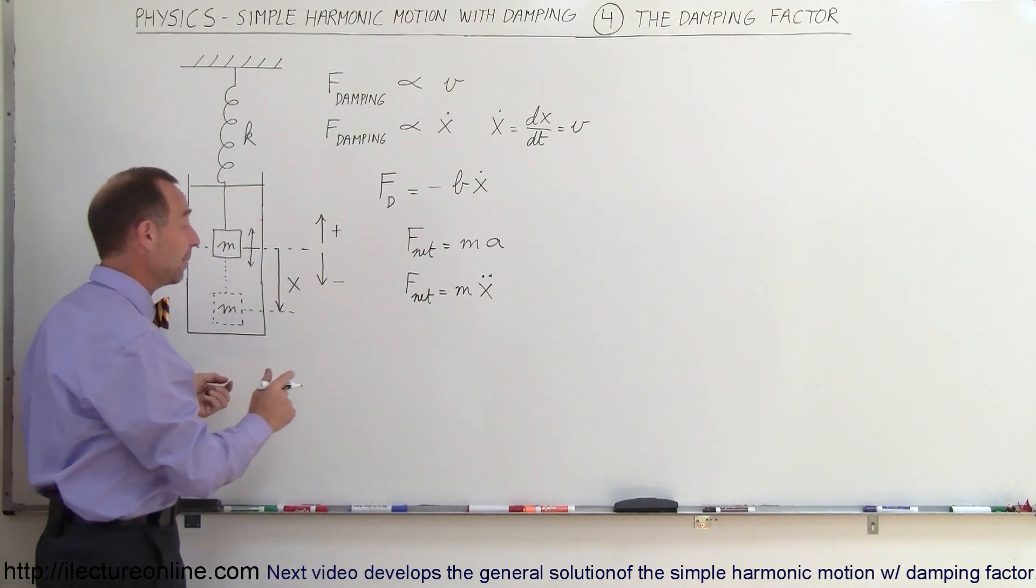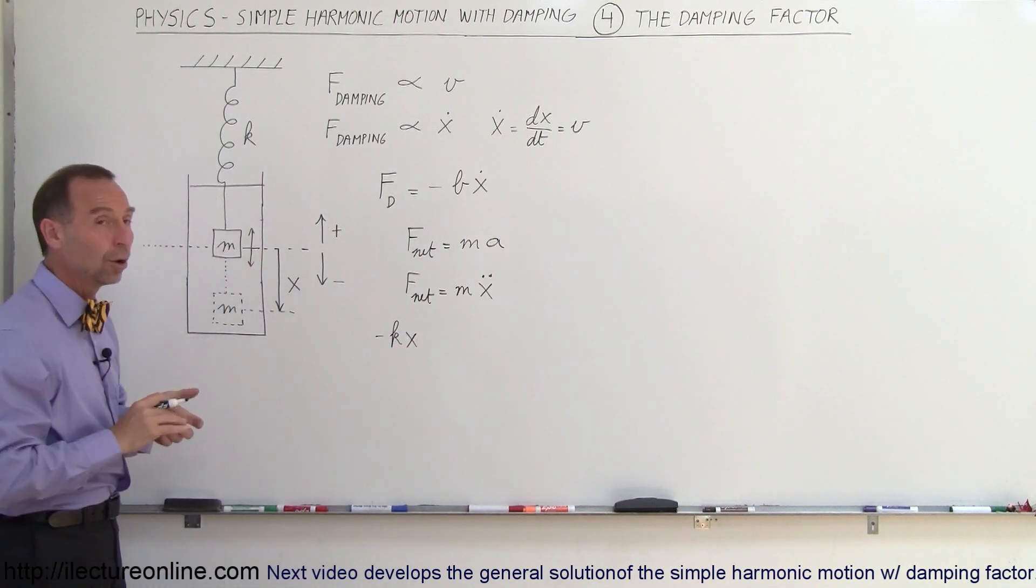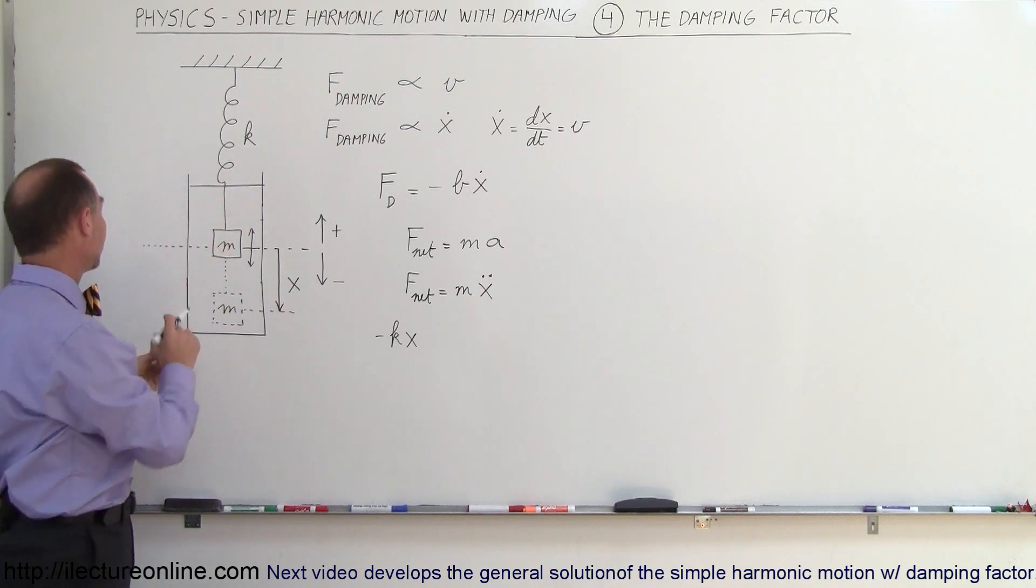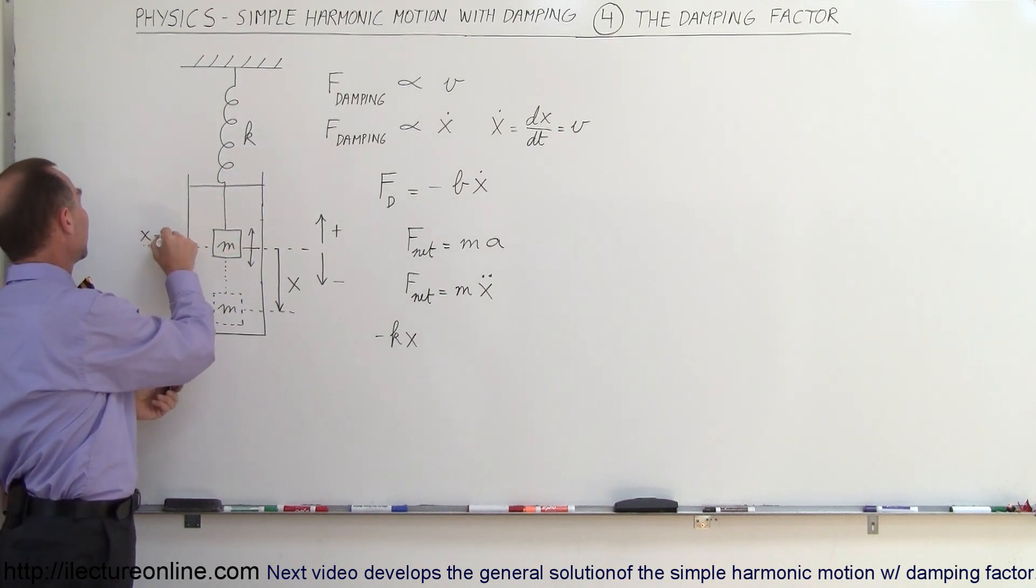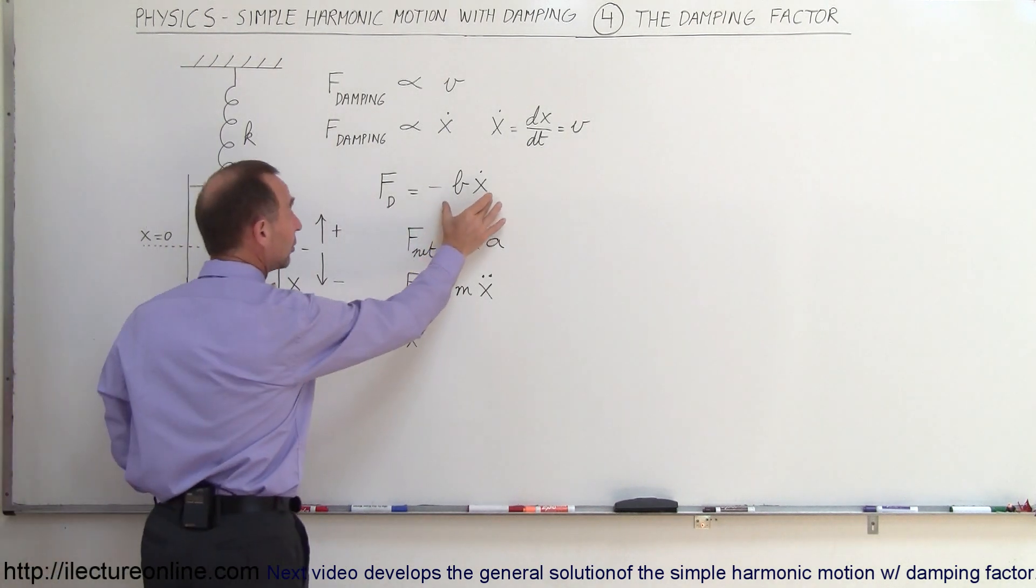What are the forces acting on it? The spring force is still there. That would be minus kx, the force exerted by the spring, which is proportional to the distance away from the equilibrium point. If you consider this here, x equals zero, as the equilibrium point.